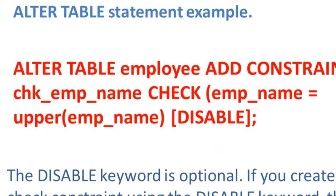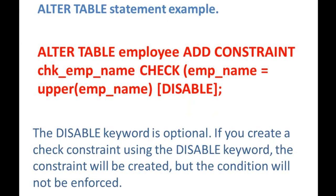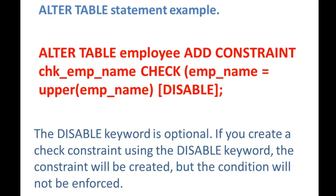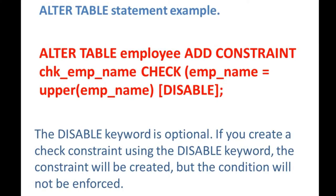Here is an example: ALTER TABLE employee ADD CONSTRAINT chk_emp_name CHECK (emp_name = UPPER(emp_name)) DISABLE. As mentioned, the DISABLE keyword is optional. If you create a check constraint using the DISABLE keyword, the constraint will be created but the condition will not be enforced.